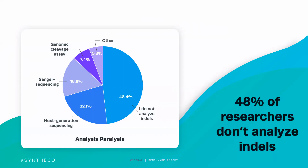Another finding from the Benchmark report was how much time people spend on analysis. People reported it took about 14 hands-on hours to analyze their CRISPR edits — an inordinate amount of time, and the second highest category after optimization. People are spending a lot of time on analysis, which may explain why so many skip it, thinking it's just too hard.